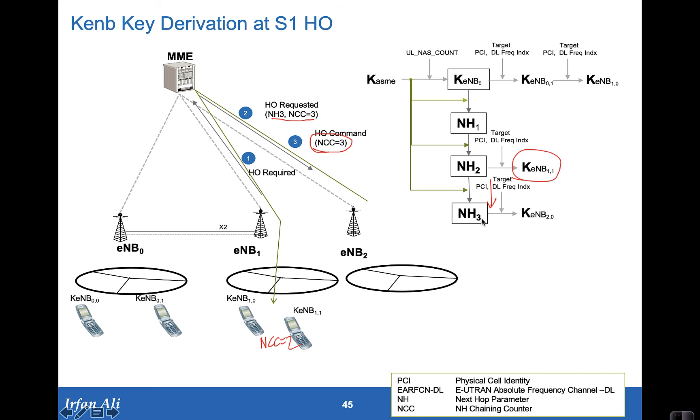it uses NH3 along with the target PCI and the downlink frequency index to come up with KE-node B2.0. And that is based on a vertical key derivation.